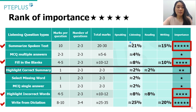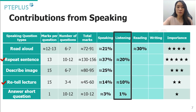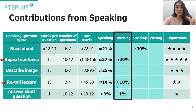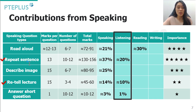Remember that your listening section marks don't just come from these eight question types alone — your speaking tasks also contribute significantly. Repeat Sentence and Retell Lecture together account for about 30 percent of your listening score. So your study time should be focused on the top four listening question types and on those two speaking tasks.